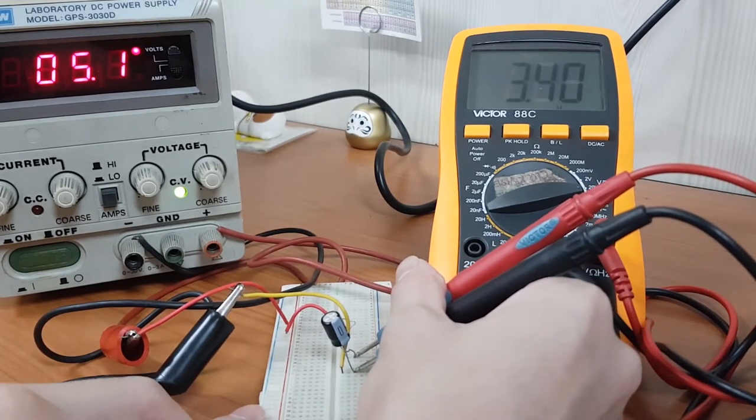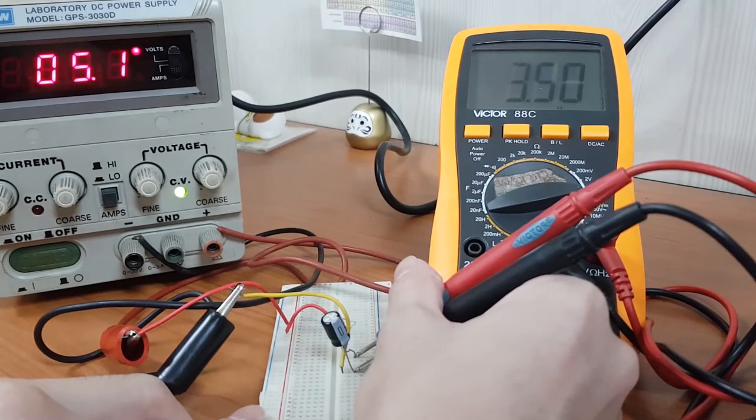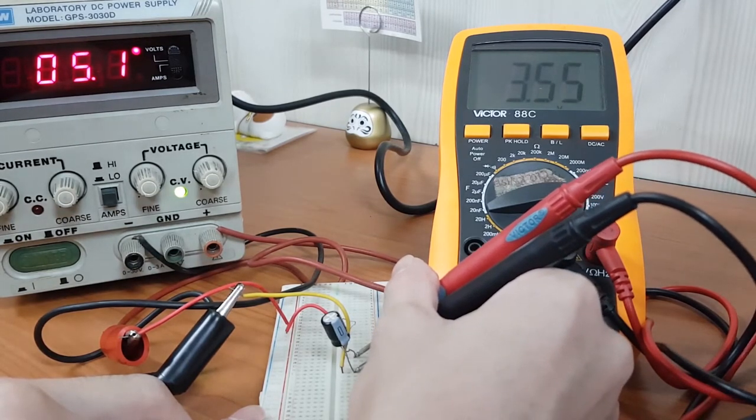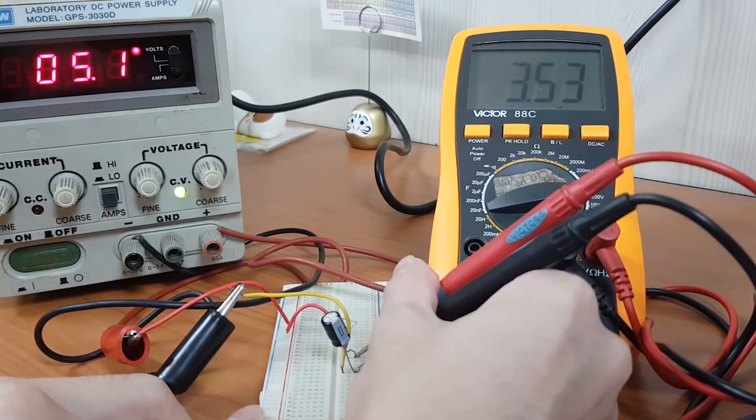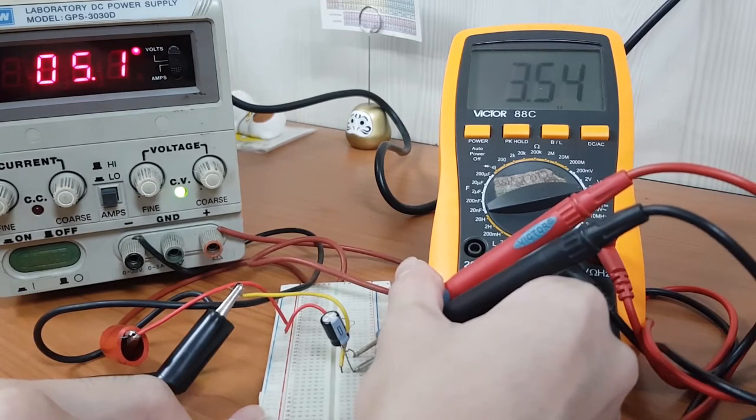While running this stopwatch, observe the increase in voltage reading across the capacitor. Record the voltage across the capacitor, let's say, every 5 seconds. And do not stop the stopwatch in the duration of data collection.